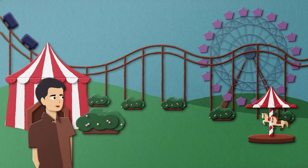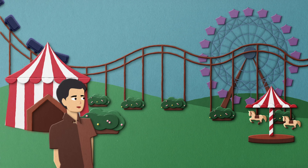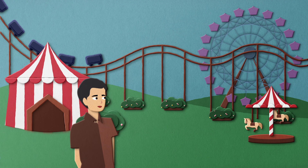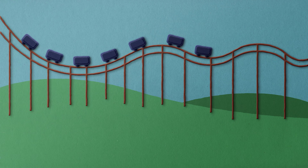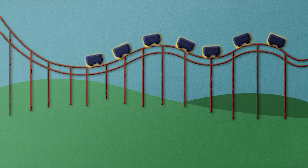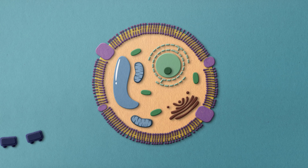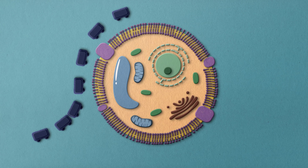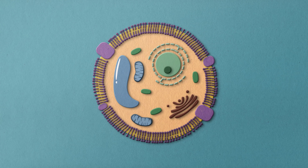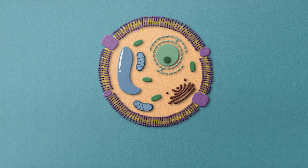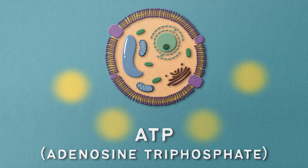Picture this. You're at a theme park and you're about to go on a roller coaster. The ride needs a certain amount of energy to operate, just like your cells need energy to perform various functions. This energy is supplied by a molecule called ATP, which stands for adenosine triphosphate.